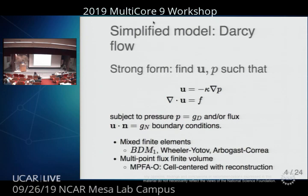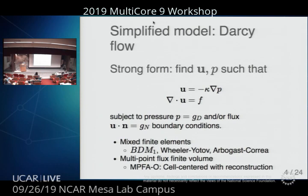As a simplified model — enough to understand the discretization requirements and a little bit easier to look at the equations — we're looking at Darcy flow. The strong form of Darcy flow has something that says divergence of the flux is equal to a source term, and then there's the Darcy relation that the flux is proportional to the gradient of the pressure. The kappa here is a conductivity coefficient; it can be tensor valued, spatially variable, and very high contrast — up to about 10 orders of magnitude contrast from element to element.